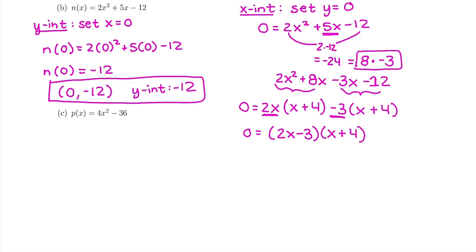And I want to see what makes each factor 0. What makes x plus 4 equal 0? And what makes 2x minus 3 equal 0? And that will give me my x intercepts. Well, the easier one, x plus 4 is 0. If I subtract 4, is that x is negative 4.